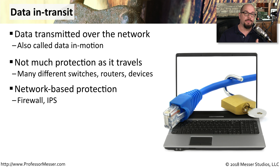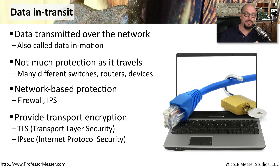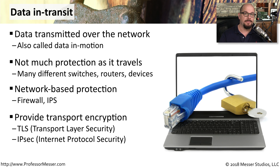In order to provide some type of protection for data in transit, we often will install firewalls or intrusion prevention systems. But one of the best ways to protect data in transit is to encrypt it. Some of the most common forms of encryption are to use SSL, or what is now called TLS, transport layer security. And encrypted tunnels often use IPsec, or internet protocol security.